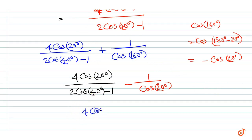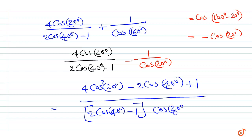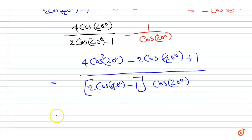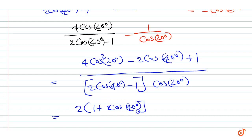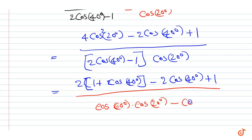This can be written as 4·cos²(20°) − 2·cos(40°) + 1 upon (2·cos(40°) − 1)·cos(20°). This equals 2·cos²(20°) equal to 2·(1 + cos(40°)) − 2·cos(40°) + 1 upon (2·cos(40°))·cos(20°), which is cos(60°)·cos(20°) − cos(20°).